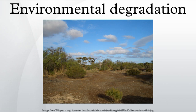Climate change and precipitation: a rise in global temperatures is also predicted to correlate with an increase in global precipitation, but because of increased runoff, floods, increased rates of soil erosion, and mass movement of land, a decline in water quality is probable. While water will carry more nutrients, it will also carry more contaminants. While most of the attention about climate change is directed towards global warming and greenhouse effect, some of the most severe effects of climate change are likely to be from changes in precipitation, evapotranspiration, runoff, and soil moisture.